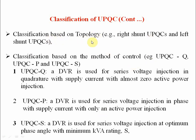Most importantly, we discussed the classification of UPQC based on topology — that is right-shunt UPQC or left-shunt UPQC. So there are two types of UPQC on the basis of topology. Now on the basis of method of control, there are three types: UPQC-Q, UPQC-P, and UPQC-S.